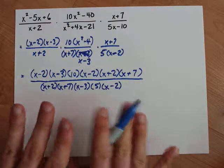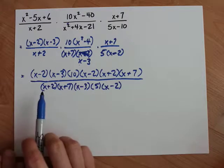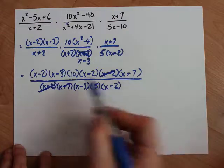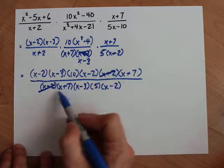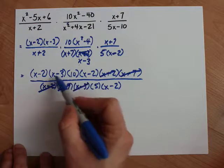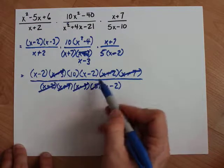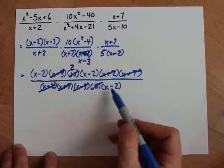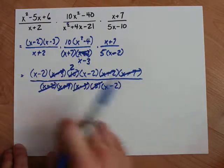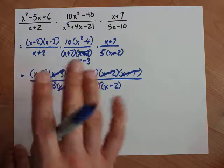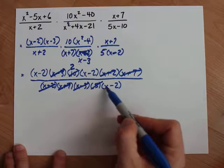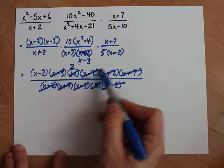Let's just be careful when we cancel here. x+2 will cancel with x+2. Great. x+7 will cancel with x+7. x-3 cancels with x-3. 5 cancels with 10 a little bit. And I have an x-2 on bottom, but it can only cancel with one of the x-2's on top. You can't cancel both of them. You can only cancel one at a time. So this x-2 cancels, and I'm going to choose this one.